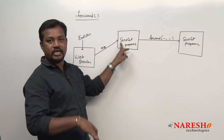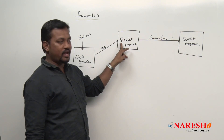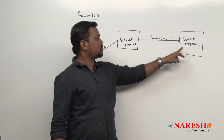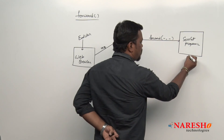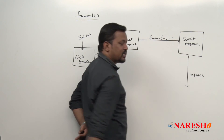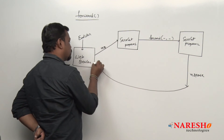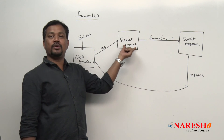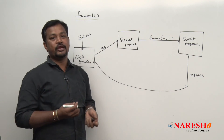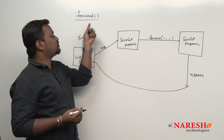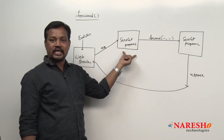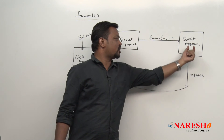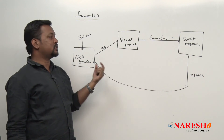In this example, servlet program one accepted the request and forwarded it to servlet program two. Whatever response it gives now, the response comes back to the web browser. So the meaning is: a servlet program can take the request and give the response to the end user. But whenever I use the forward method, one servlet program will take the request and forward it to the second servlet program. The response will come from the second servlet program — this kind of communication.